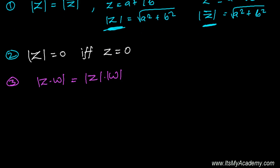Let's say you have two complex numbers Z and W. If you find the product of them and then find the absolute value of that, it is the same as — that is equal to — the product of the individual absolute values of Z and W.